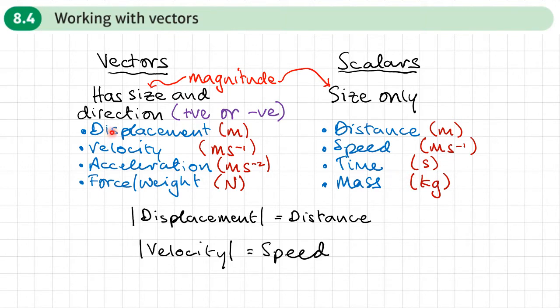We can convert some vector quantities to scalar quantities. For example, displacement, if you want to find the distance represented by displacement, if you find the modulus of the displacement, that basically means doing Pythagoras on the displacement numbers, you get a distance. And with velocity, if we find the modulus of the velocity, in other words do Pythagoras on the velocity numbers, we get the speed.